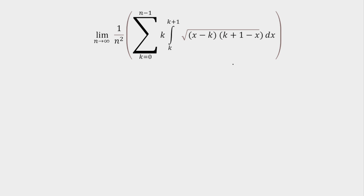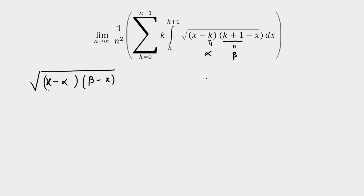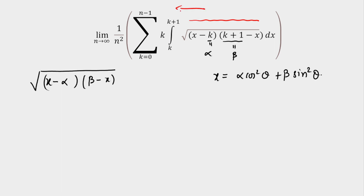First I'm going to focus on the integral and generalize it. Whenever you have root over (x minus alpha)(beta minus x), here k is alpha and k plus 1 is beta. Whenever this type of integral is present, you have to take a substitution. So x will be equal to alpha cos²θ plus beta sin²θ. Once I calculate the integral, I'll evaluate the summation, then the limit — going from right to left.